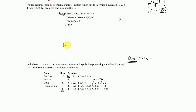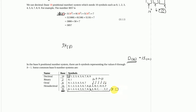For base 36, we need the first 10 digits and letters A through Z. If the base is greater than 36, we would need to introduce some other kind of symbols.